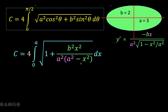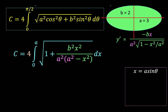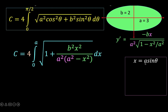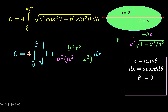At this point, we perform trigonometric substitution. We let x equal a times sine theta, so dx over d theta equals a cosine theta, meaning dx equals a cosine theta d theta. For the limits of integration at the first quadrant, we start at theta equals 0 and stop at theta equals pi over 2. With these substitutions, let's go back to the formula for C.